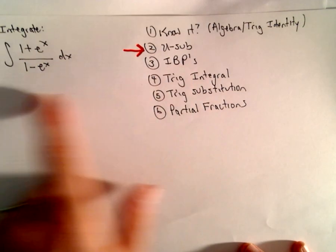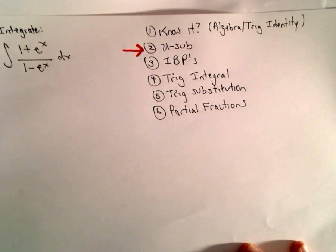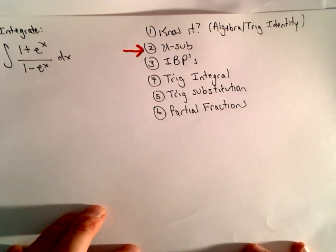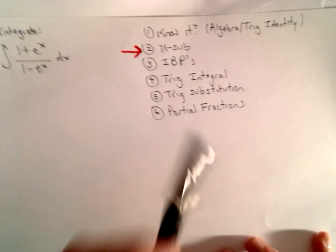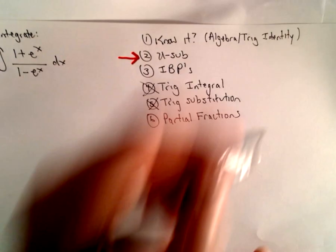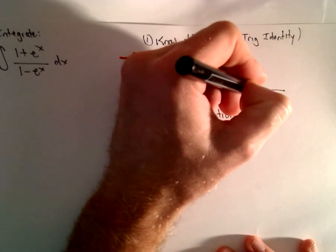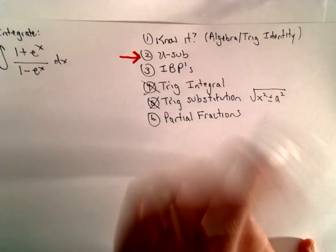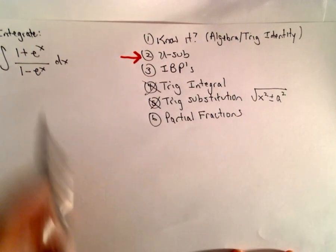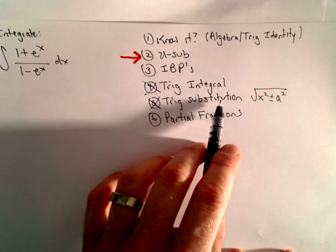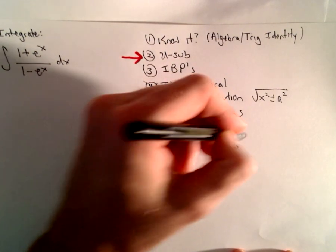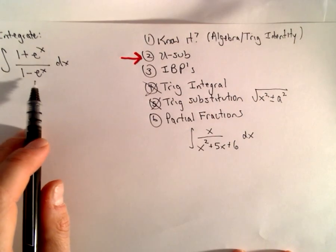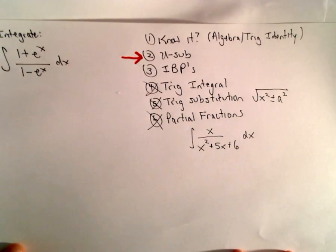A lot of the more challenging problems involve using a u-substitution and then some other technique. Integration by parts — you can pick something to be u and something to be dv, but I don't really see what would work here. Maybe it's integration by parts, but I don't think so. There's no trig in here, so we don't have to worry about trig integrals. Trig substitutions typically involve quadratics — x² plus or minus a² — often under square roots. I don't see that here. Partial fractions is for rational functions like x / (x² + 5x + 6). This is not a rational function because we have e^x, so it's not partial fractions either.